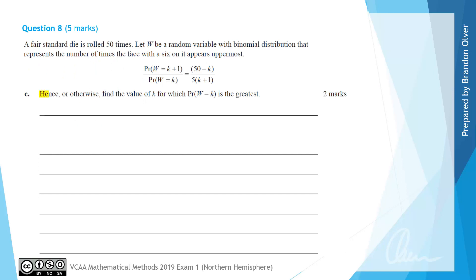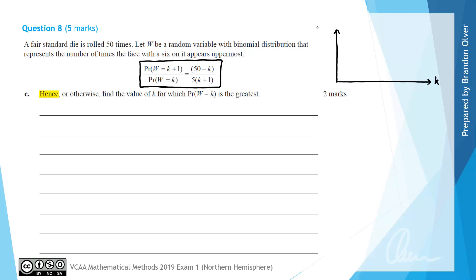For part C, it says hence or otherwise find the value of K for which the probability of W equals K is the greatest. The word 'hence' means we should use the ratio found in part B. To understand the approach, I'll use a graphical display: the horizontal axis shows values of K and the vertical axis shows the probability that W equals K.